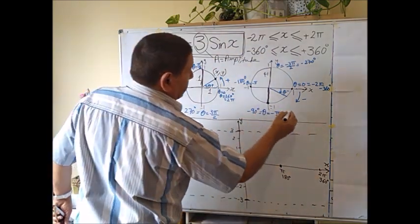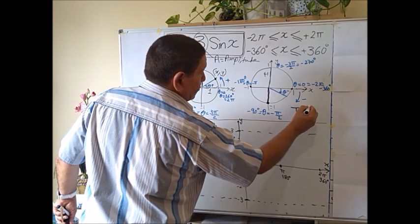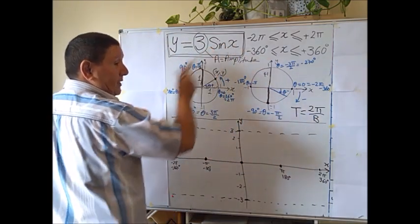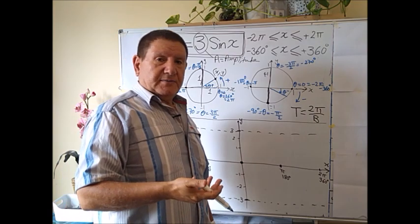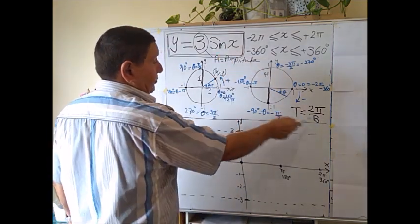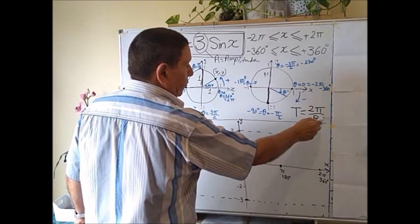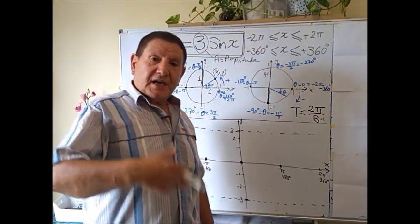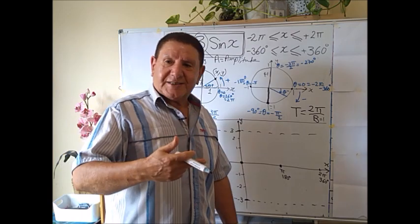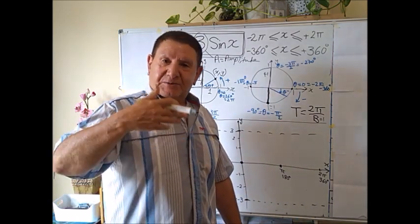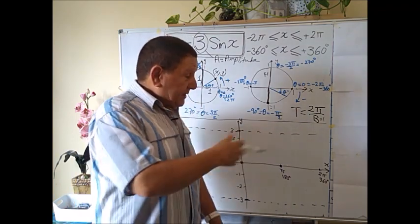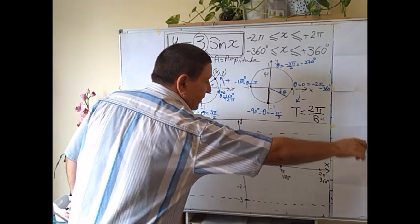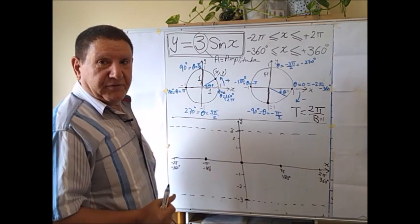The period T is given by T = 2π/b, where b is the coefficient of x — sometimes called the frequency. Since here it is 1 (because sin(x) means sin(1·x)), the period is 2π/1 = 2π. This means the wave completes one full cycle over a length of 2π — it repeats itself after that.